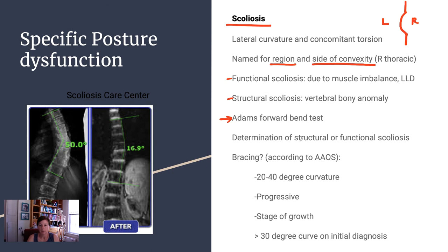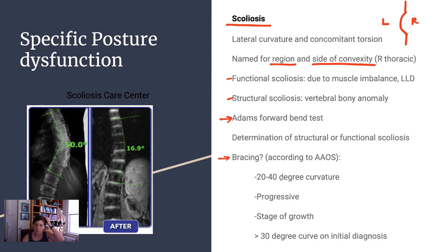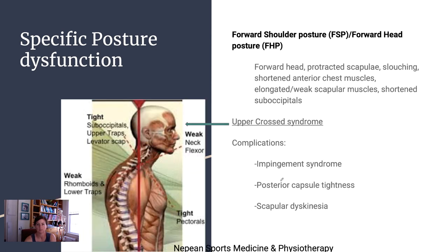The Adams forward bend test helps determine whether scoliosis is structural or functional. According to the American Academy of Orthopedic Surgeons, bracing is indicated for a 20 to 40 degree curvature, if it's a progressive curve getting worse over time, depending on the patient's stage of growth, and if the initial diagnosis shows a 30 degree or greater curve.